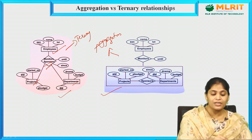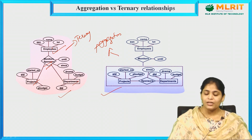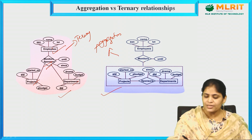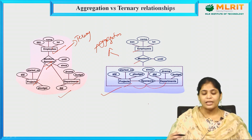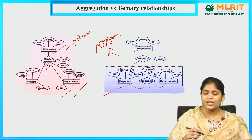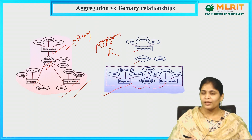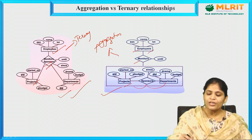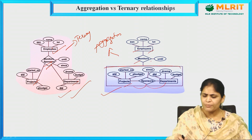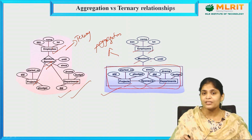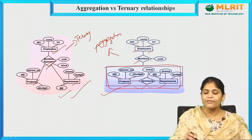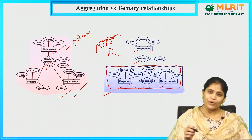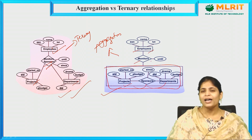A ternary relationship contains exactly three entities. In the aggregation model, employee monitors projects sponsored by departments, which is clearer than the ternary representation. Aggregation is meant for a more meaningful ER model — rather than using ternary, binary, or unary relationships, aggregation is more meaningful. In aggregation, employees monitor a big composite entity which itself contains entities and relationships. Each entity has its own set of attributes, and the relationship may also have descriptive attributes.